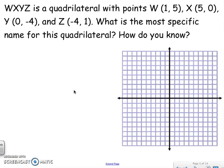We've got W at (1, 5), X at (5, 0), Y at (0, -4), and Z at (-4, 1). When you connect those lines, it looks like a square — but it could be a rhombus, a rectangle, or a parallelogram. We have to prove it. I'm going to prove it the fastest way and prove that the diagonals are congruent and perpendicular.